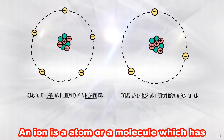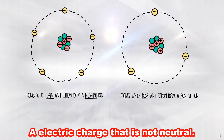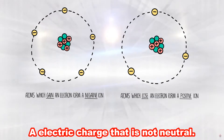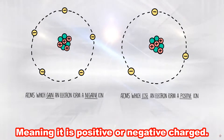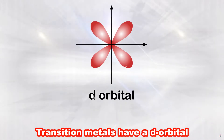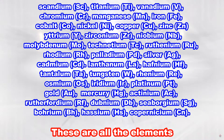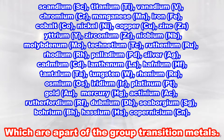An ion is an atom or a molecule which has an electric charge that is not neutral, meaning it is positively or negatively charged. Transition metals have a d orbital. These are all the elements which are a part of the group transition metals.